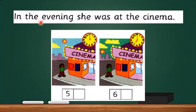The third sentence, in the evening, she was at the cinema. So, let's look at picture five. The clock shows that it's 12 o'clock. And the sky is bright. So, it's 12 o'clock in the afternoon. Whereas, picture six. The clock shows that it's 7 o'clock. And at this time, the sky is getting darker. And it's the time around sunset. So, it's 7 o'clock in the evening. The answer is picture six.